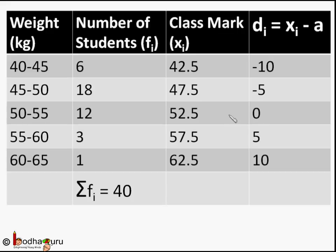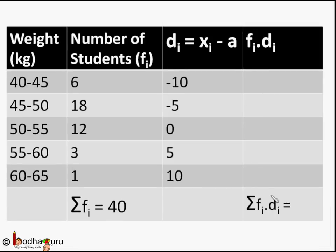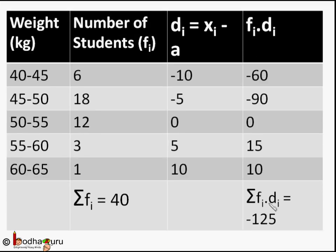We will now find the mean of the deviations. That is d̄ which is sum of products fi into di divided by sum of frequencies. Why mean of deviations? Because finding d̄ is much easier as all the di have small values now.